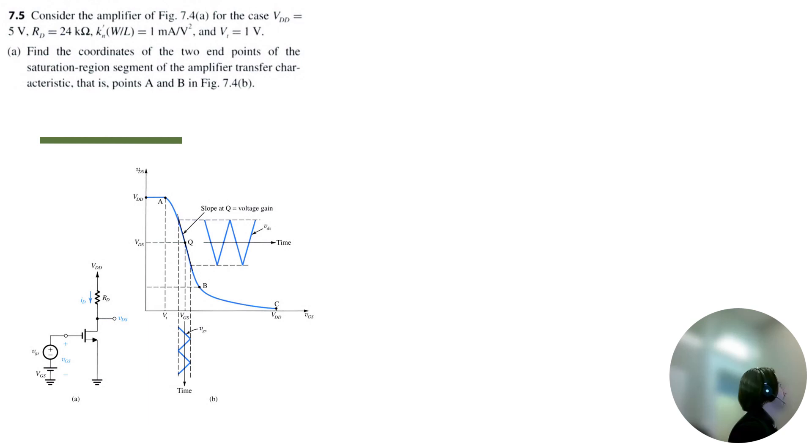Part A. Find the coordinates of the two endpoints of the saturation region segment of the amplifier transfer characteristic, that is points A and B. Point A is pretty straightforward. On the VGS axis, it has a coordinate VT. And on the Y axis, VDS axis, it has the coordinate VDD.